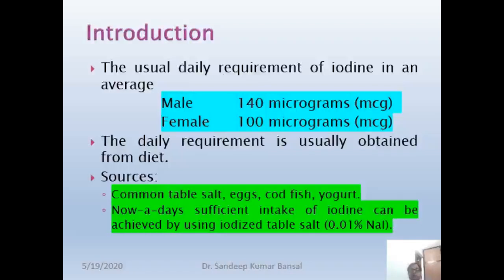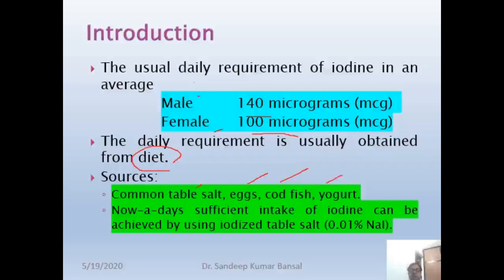If we look at the requirement of iodine, for males it is 140 micrograms per day, and for females it is 100 micrograms per day. Usually it is obtained from diet, and the common sources are table salt, eggs, codfish, yogurt, and most of the iodine is obtained from iodized table salt.